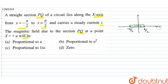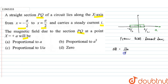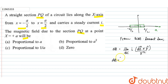Now, we need to find the magnetic field at x equal to a. We can apply the Biot-Savart Law: the magnetic field at a point is given by (mu naught / 4 pi) times I times DL cross R-cap divided by R squared.